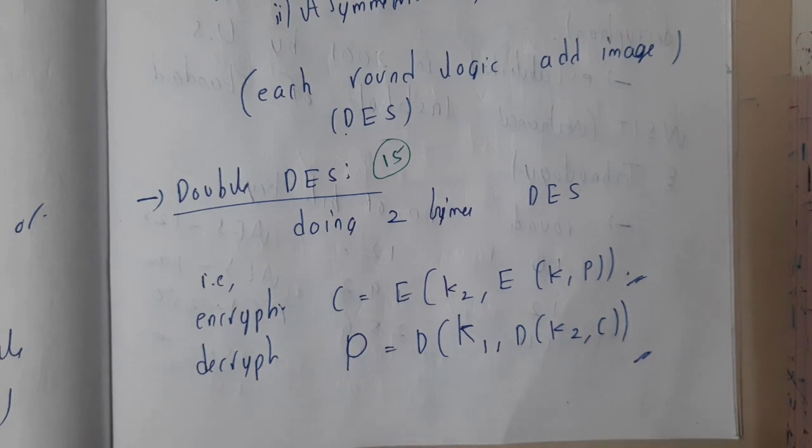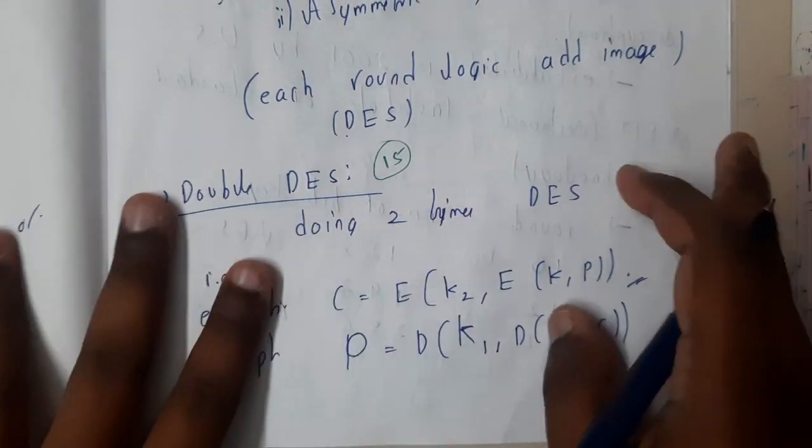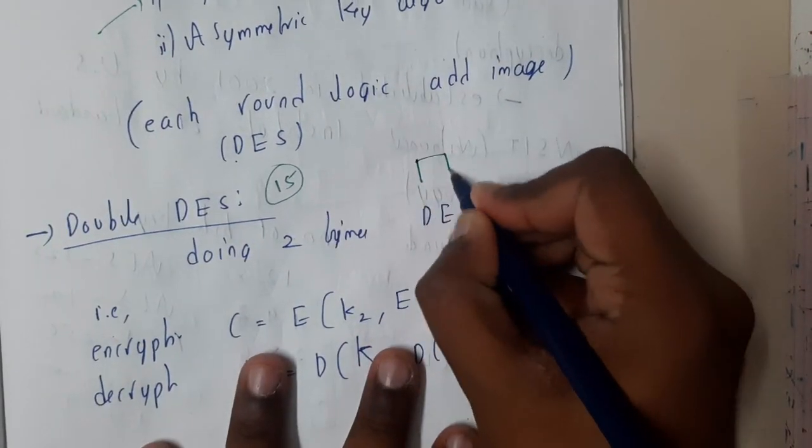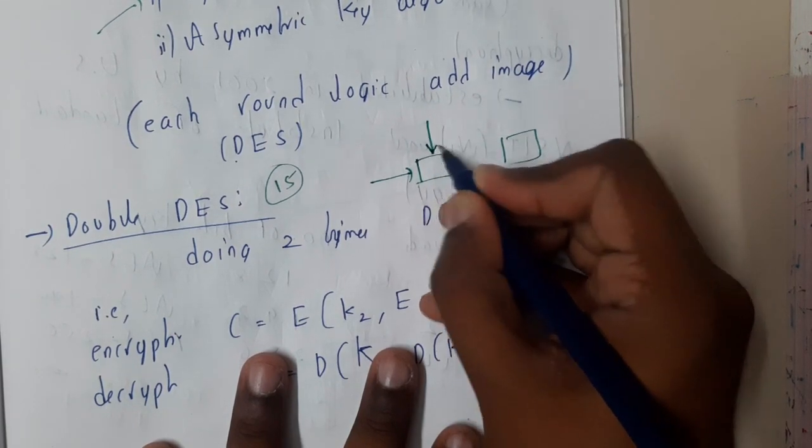Basically from the names only you can say: double means you will be doing it two times. So here you will be having the DES algorithm two times. The input with the particular key is done.